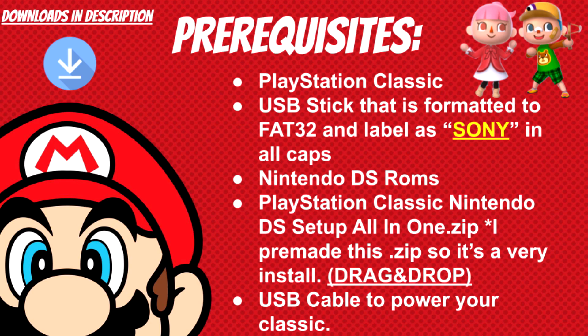You'll also need a PlayStation Classic Nintendo DS setup all-in-one zip file, which contains all of the files needed for this video. I already pre-made this zip so it's very easy to install — I just put all the required files into one package so you can drag and drop from your USB to your Classic instead of managing thousands of files. Last but not least, you need a USB cable to power your Classic — anything that charges a PlayStation 4 or an Android phone will work.